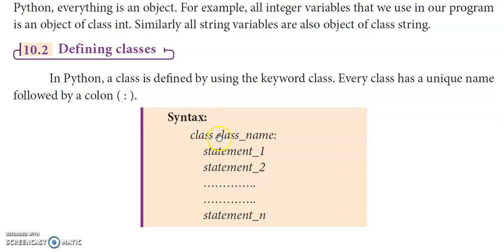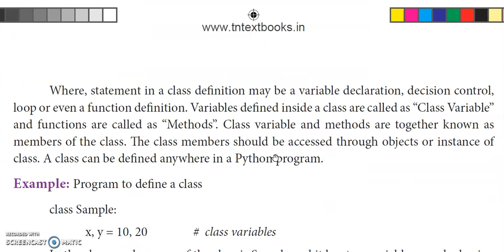To define a class, the syntax uses the class keyword followed by the class name and a colon. Inside the class, there are n number of statements, all properly indented. The statements can be variable declaration statements, decision control statements, loops, or function definitions. Variables declared inside a class are called class variables, and functions inside the class are called methods. Together, class variables and methods are called members of a class.